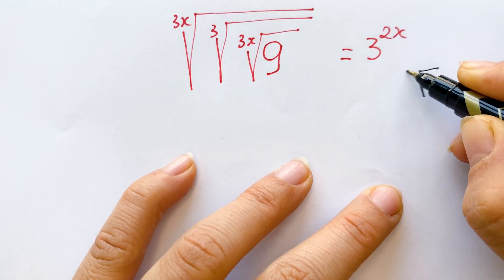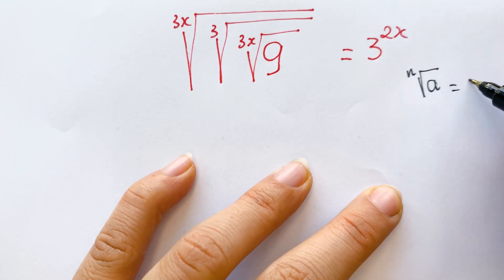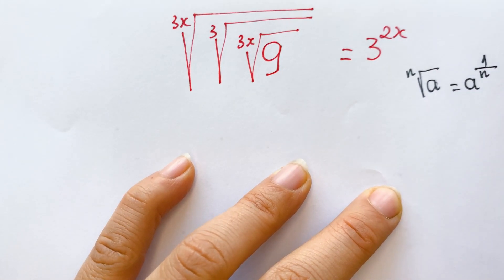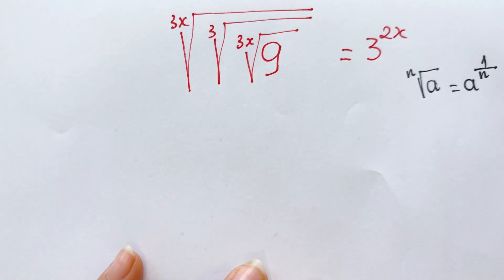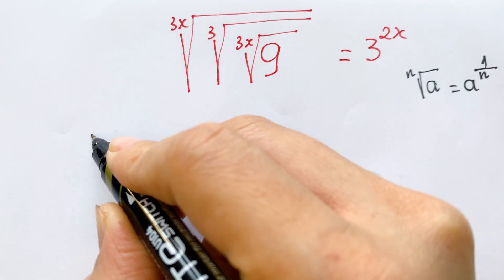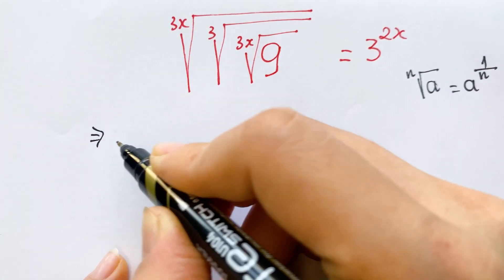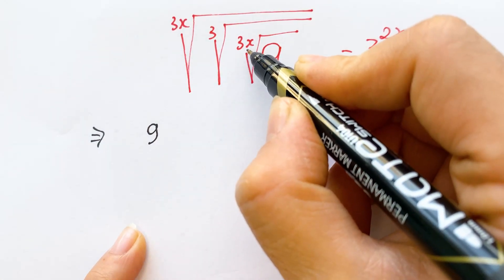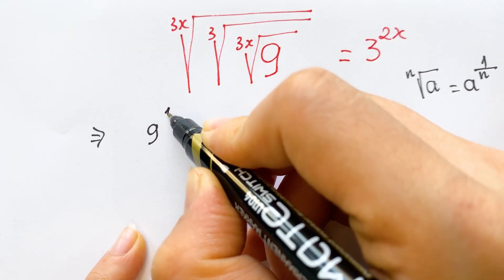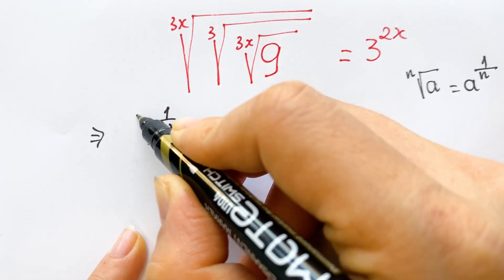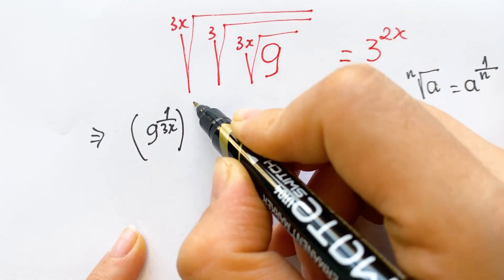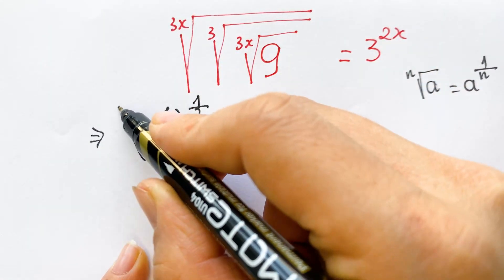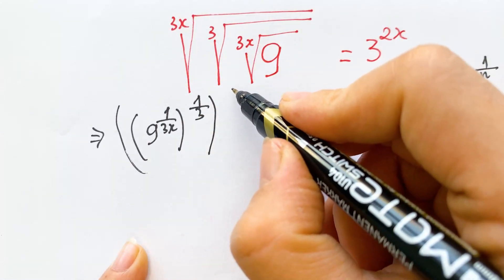The square root of a to the n is equal to a to the power one over n. So therefore we can rewrite: we can rewrite nine to the power one over three x, and then the next one to the power one over three x.